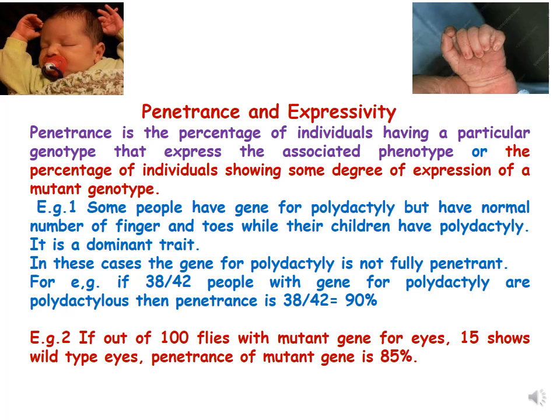Another example: suppose we have 100 flies with a mutant gene for eyes, and out of these 100 flies, only 15 show wild-type eyes. Then we say the penetrance of the mutant gene is 85%. It means that out of 100 flies with the mutant gene for eyes, we expect all 100 to show expression, but 85% show the mutant expression and 15% show wild type. Although the mutant gene is present in those 15 flies, it is not showing expression.